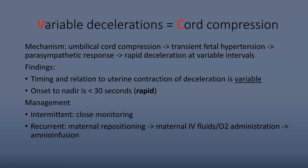For variable decelerations, the mechanism is cord compression leading to a brief period of fetal hypertension and a parasympathetic response. Because the cord is compressed transiently and periodically, the decel happens more rapidly and unpredictably. Unlike early decelerations, the timing is variable and not always related to contractions. The key feature is that onset to nadir is less than 30 seconds — rapid — which is why it looks like a V rather than the gradual upside-down hump of a uterine contraction.